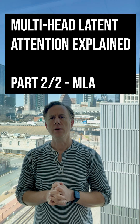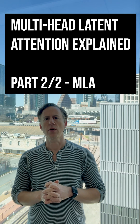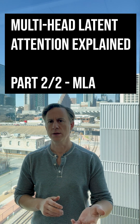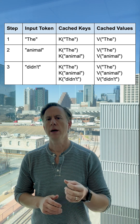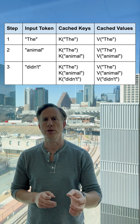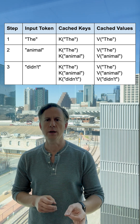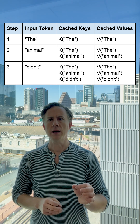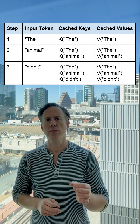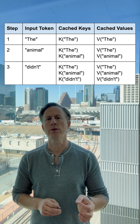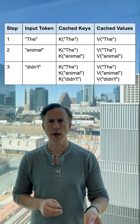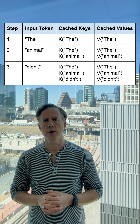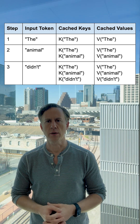As key and value tensors for earlier tokens in a sequence remain the same, they can be cached to avoid unnecessary computations. This KV cache can unfortunately balloon in longer text, becoming a memory bottleneck that slows down inference.